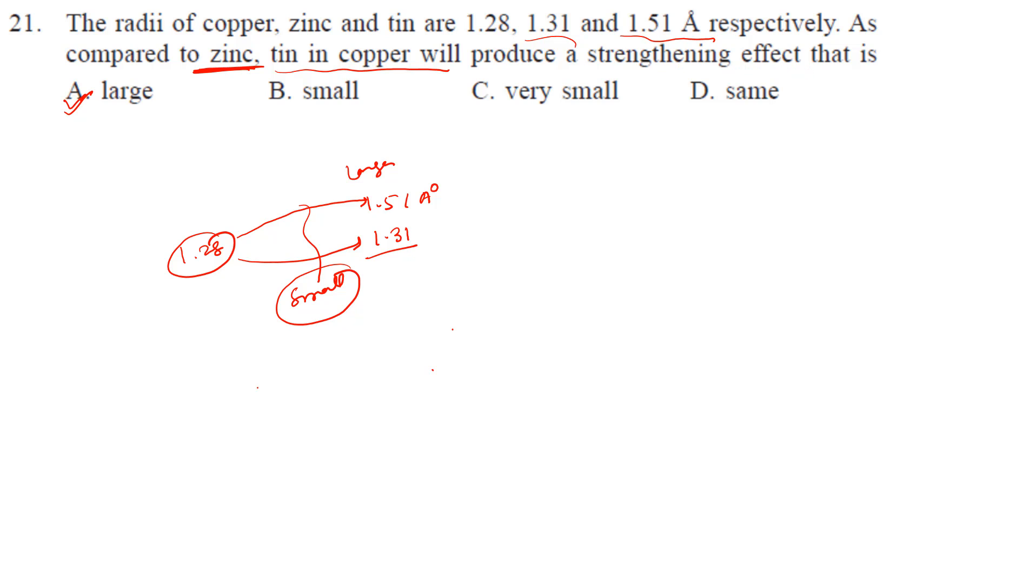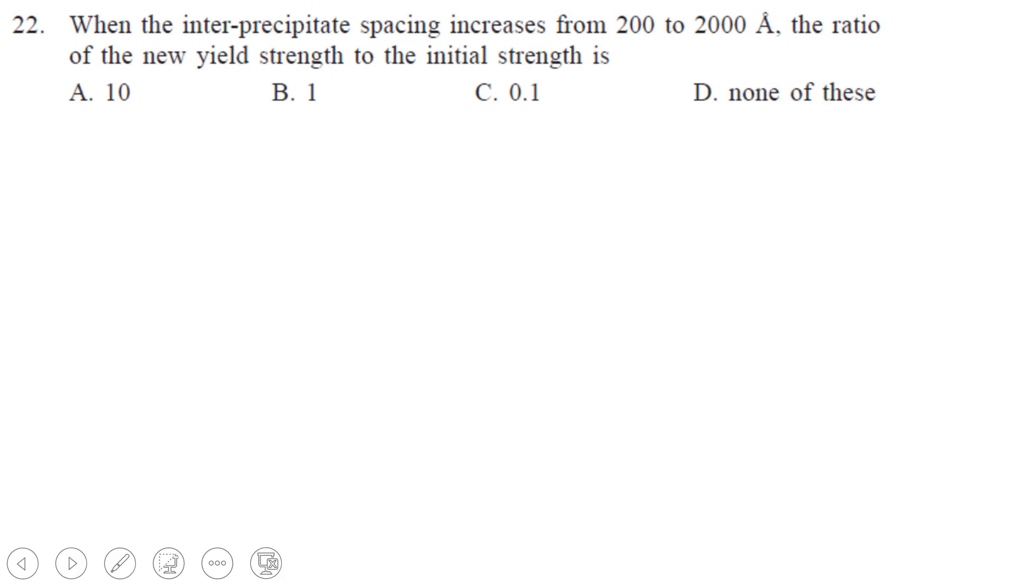Next, when the inter-precipitate spacing increases from 200 to 2000 angstrom, the ratio of the new yield stress to the initial stress is what? We know the stress required to move a dislocation when there is a precipitate is equal to Gb upon L. L is the distance. In the first case, tau 1...